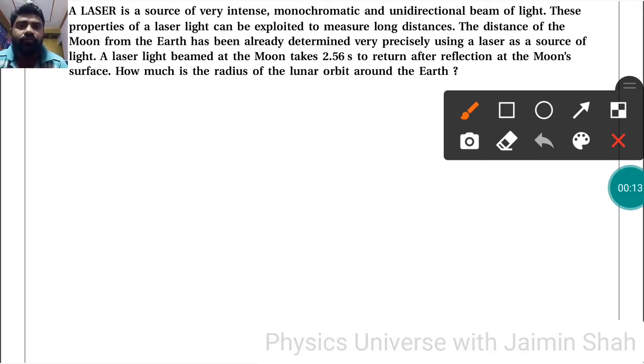The distance of the moon from the earth has been already determined very precisely using a laser as a source of light. A laser light beamed at the moon takes, so t here is equal to 2.56 seconds to return after reflection at the moon's surface. How much is the radius of the lunar orbit around the earth?